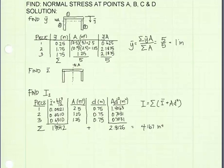I sum up my individual moment of inertia values. I sum up my A d squared values, add them together, and I get my total moment of inertia is 4.167 inches to the fourth.